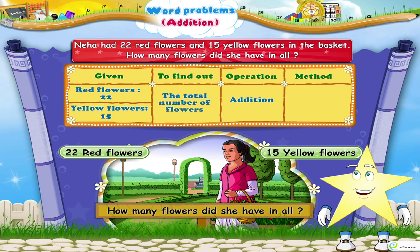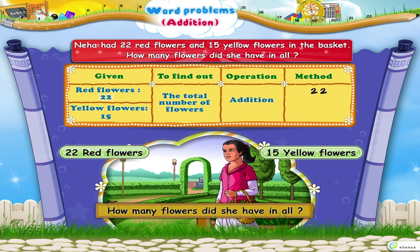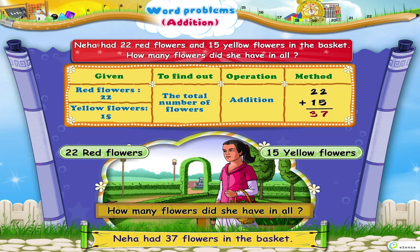Let us actually perform the addition. 22 plus 15: 2 plus 5 equals 7, and 2 plus 1 equals 3. So, Neha had 37 flowers in the basket.